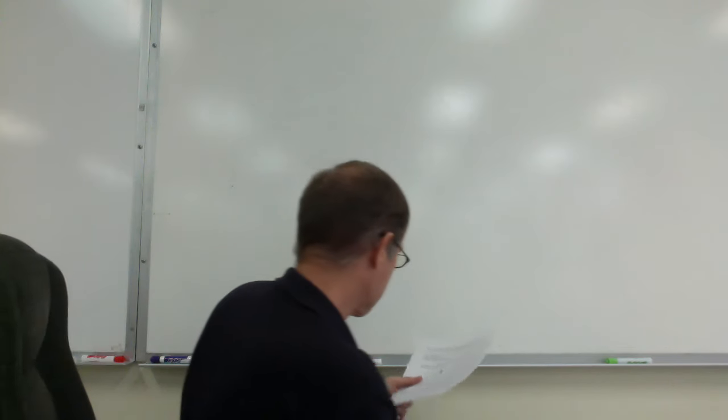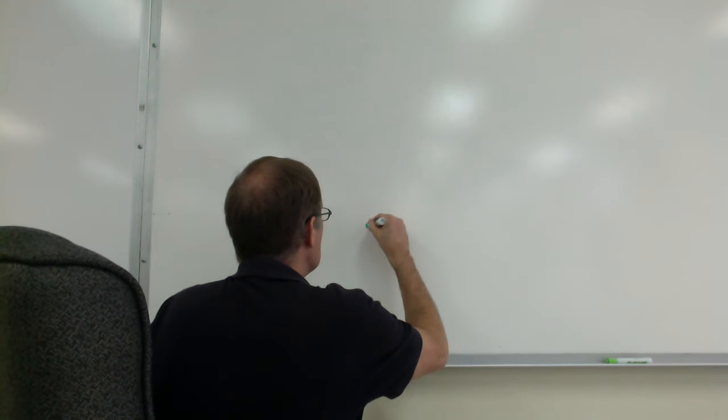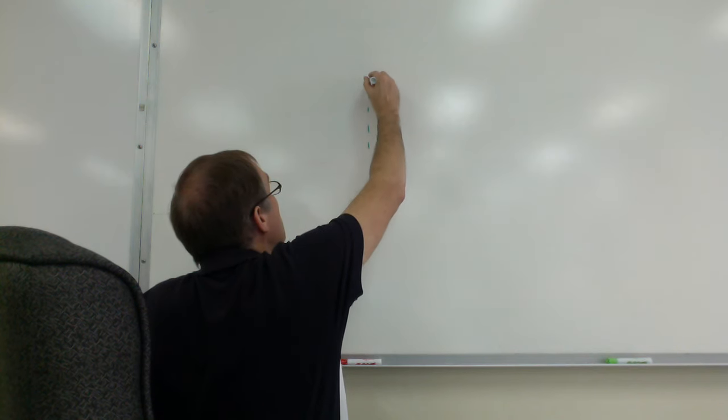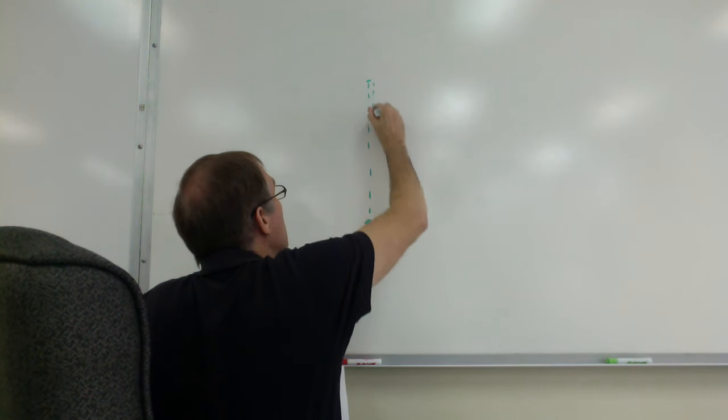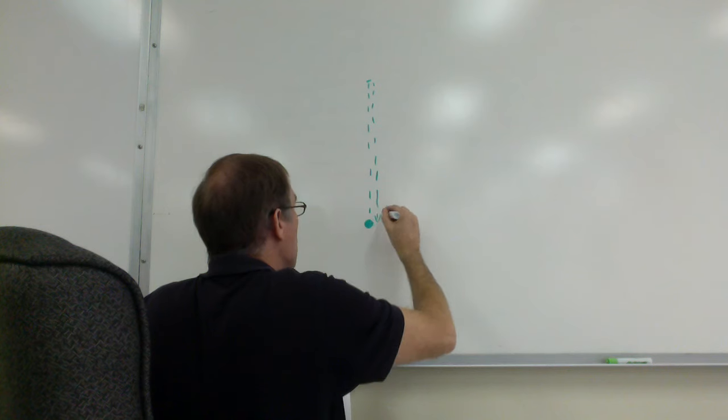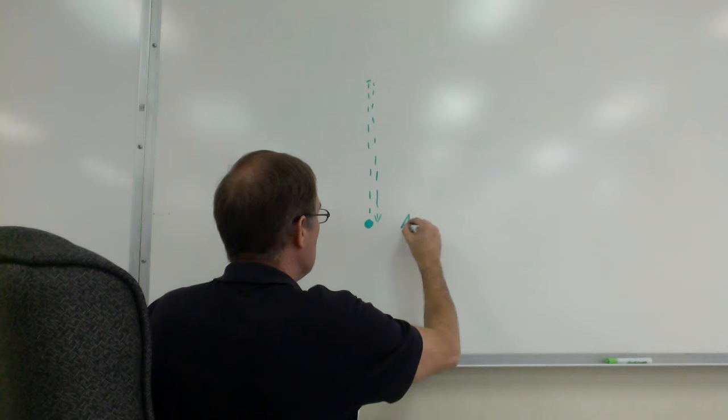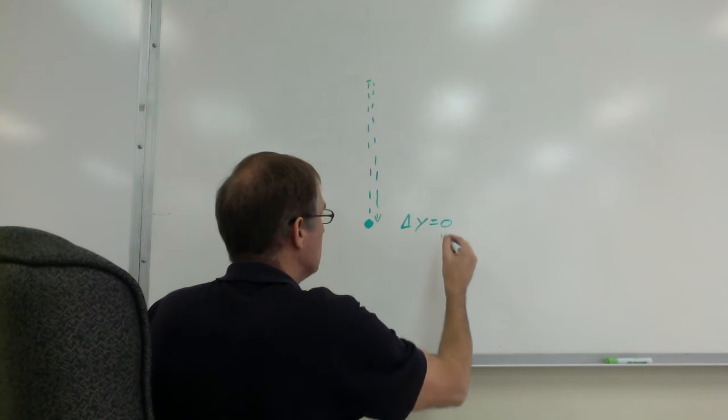Alright, so you throw this thing upward, it reaches the highest point, and then it comes back down again. And it says that it is caught at the same height it was thrown, that means that delta y for the whole trip is zero.